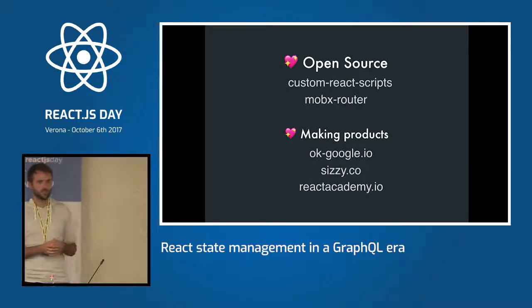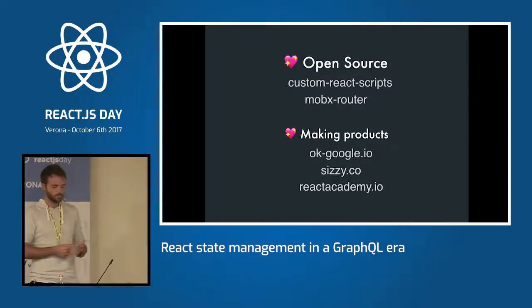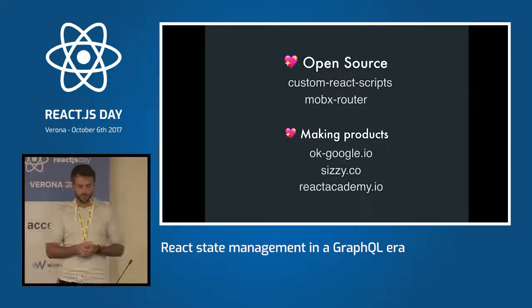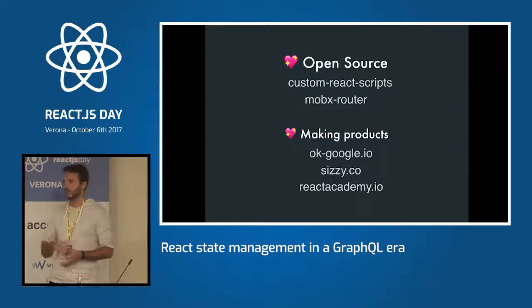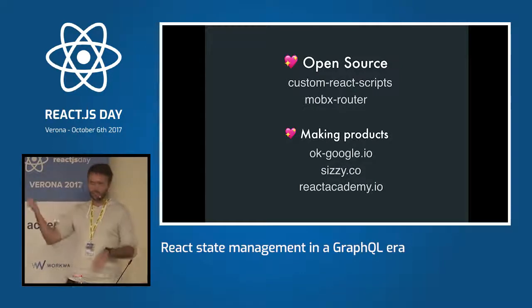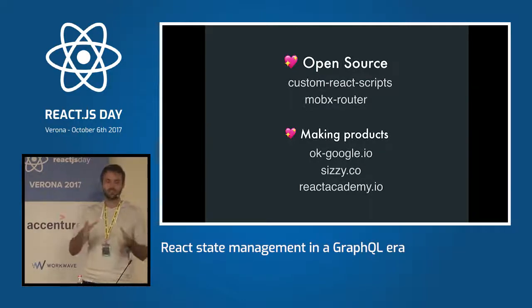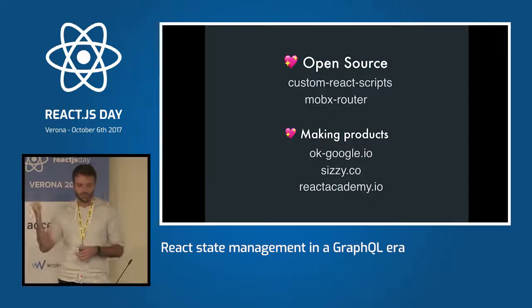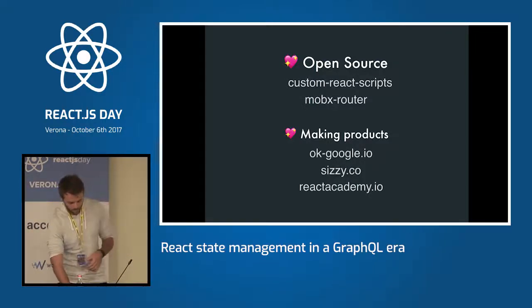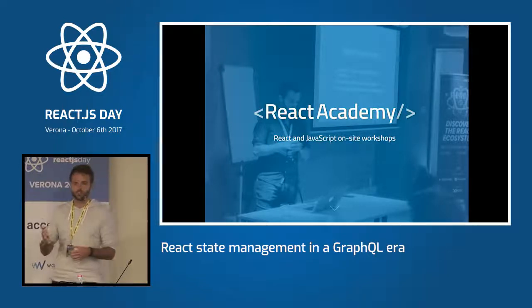I have MobX Router, which is a simple router for MobX apps. For the products I've made, some of the most recent and popular ones are OKGoogleIO, which is an interactive list of commands for the Google Assistant; CZ.co, which is an app to preview and test responsive websites on multiple devices at once; and the latest one is reactacademy.io, where I'm doing React and JavaScript on-site workshops.